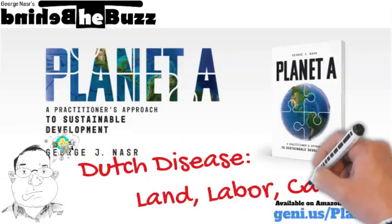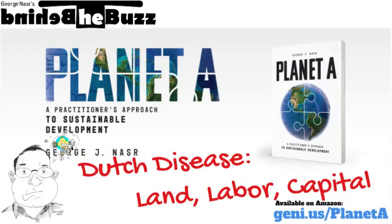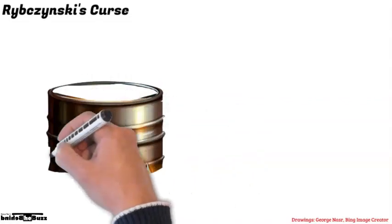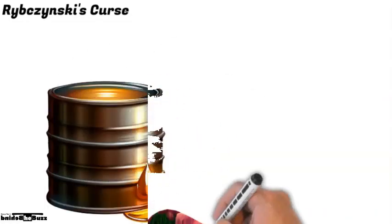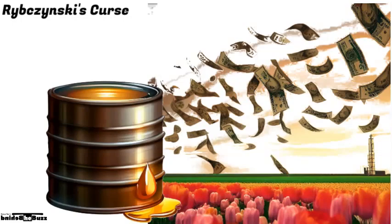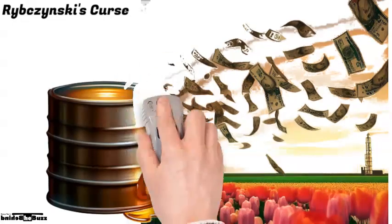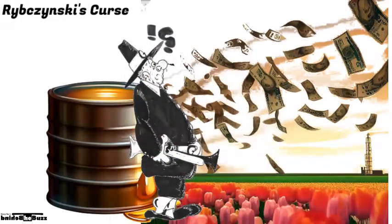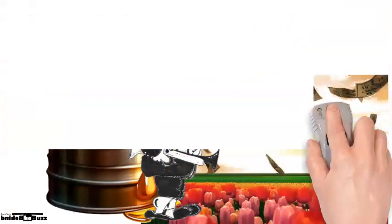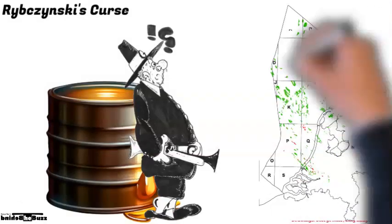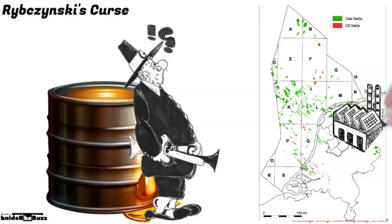There can be too much of a good thing, especially with oil. When countries discover oil, they risk catching the resource curse. Some call it Dutch disease. Dutch disease refers to an economic slump in Holland that followed large oil discoveries in the North Sea. Soon after exploitation began, the value of Holland's national currency appreciated.